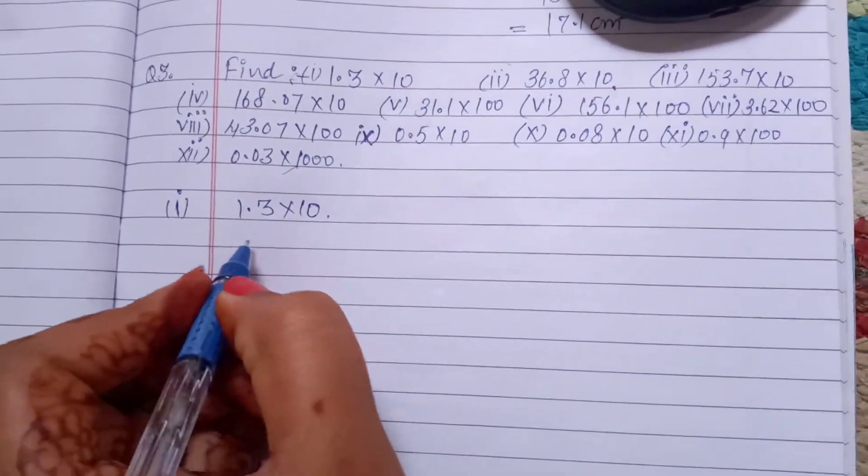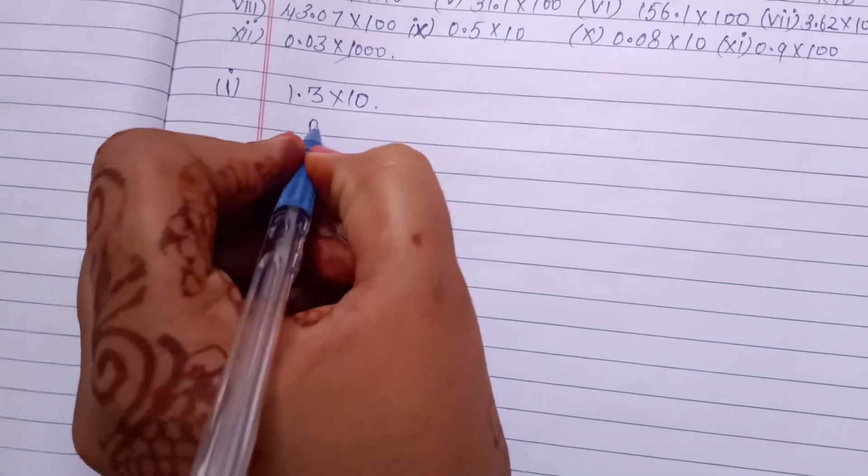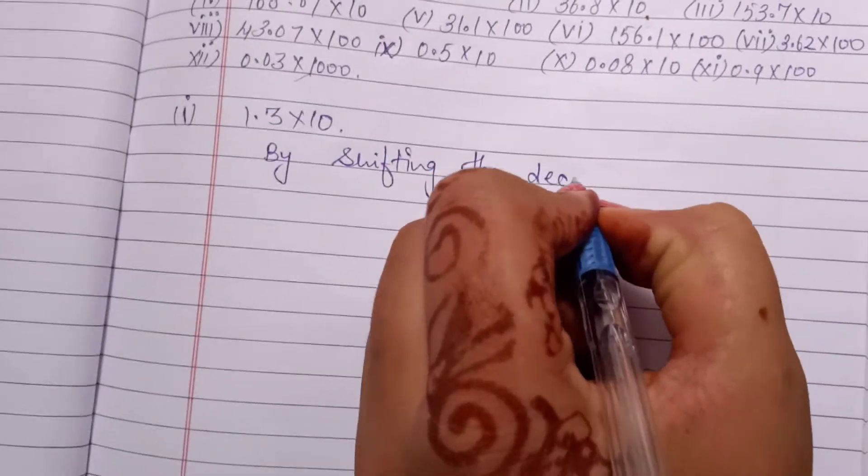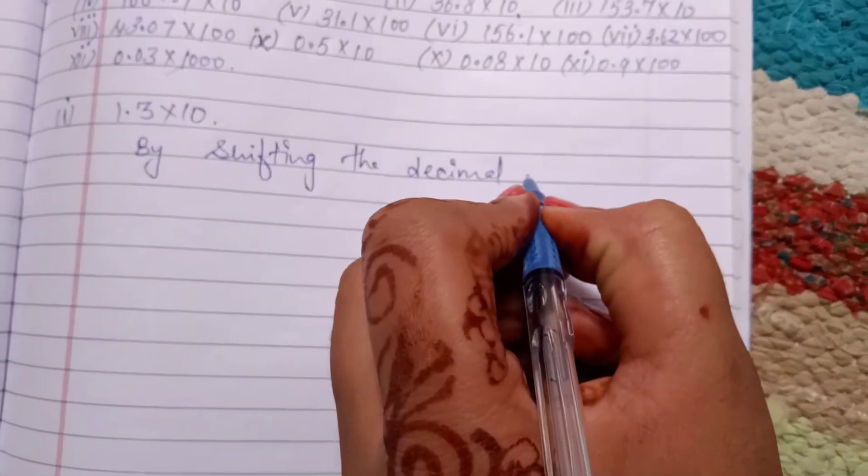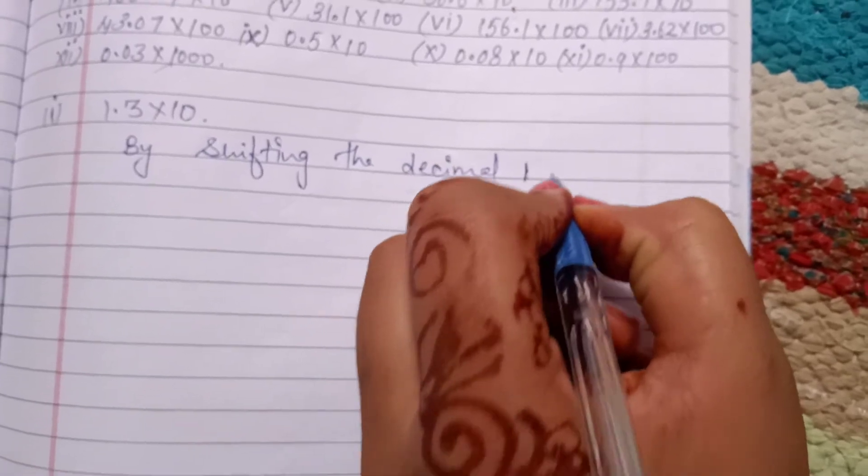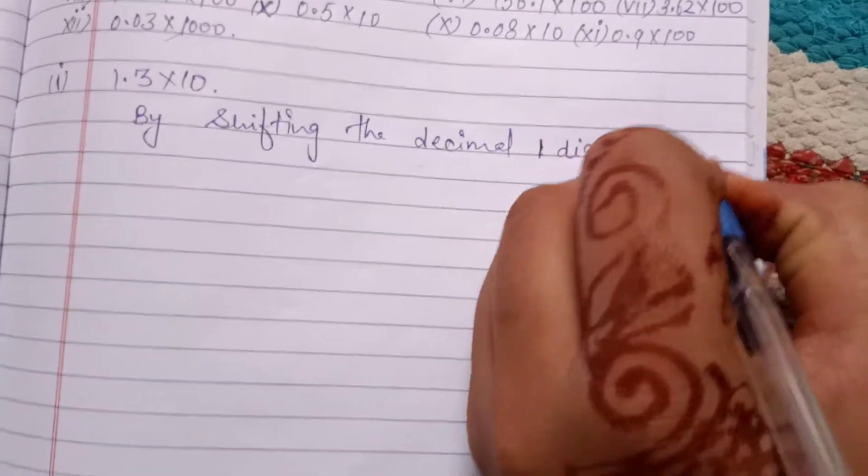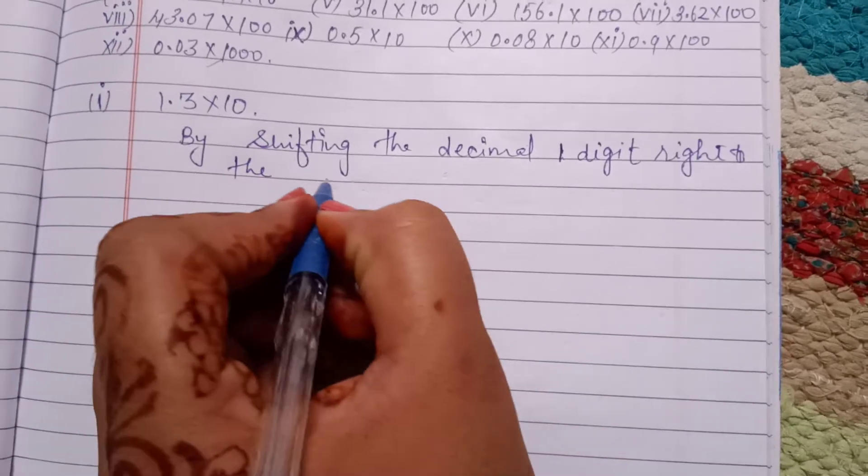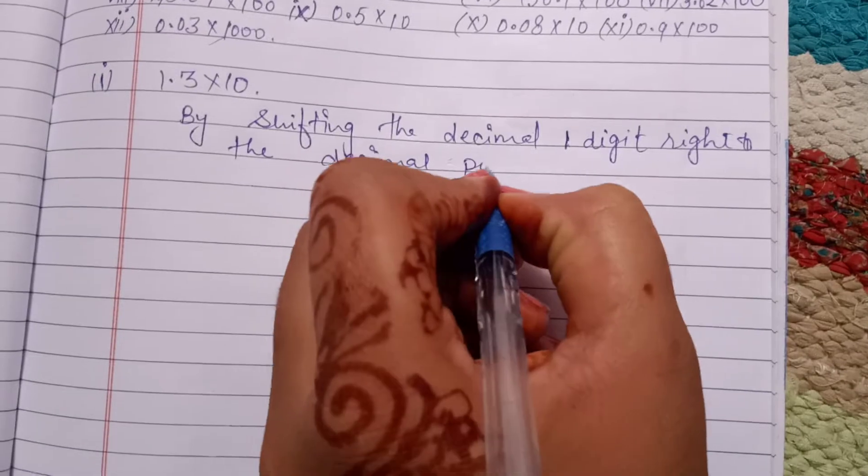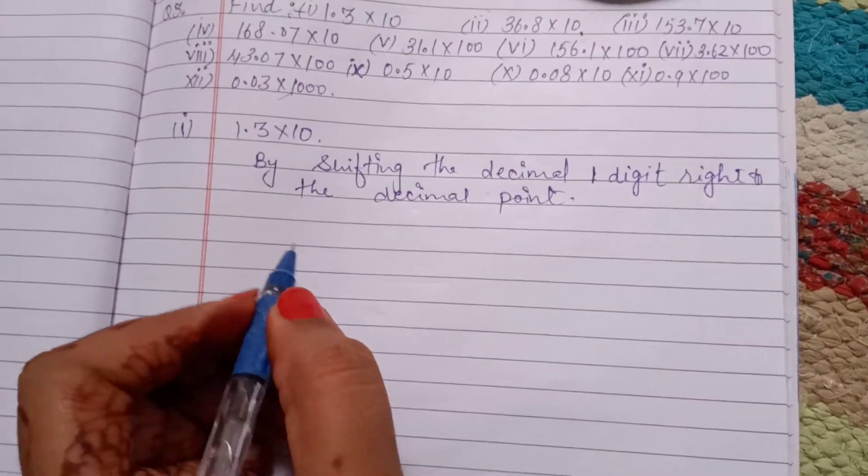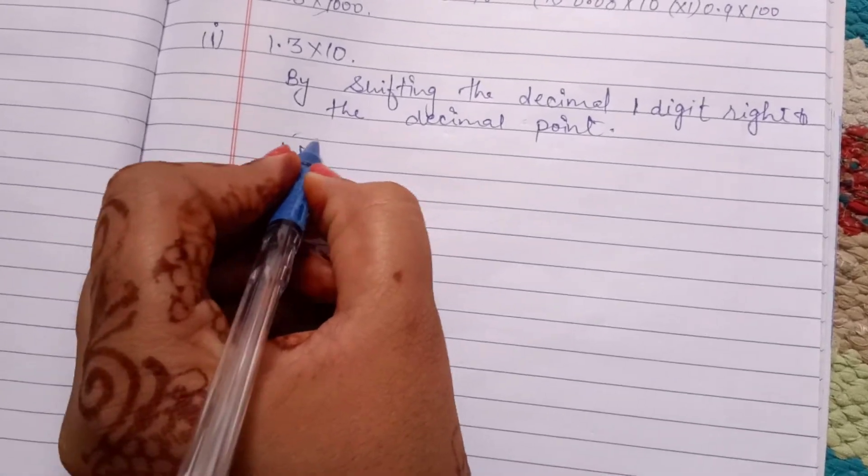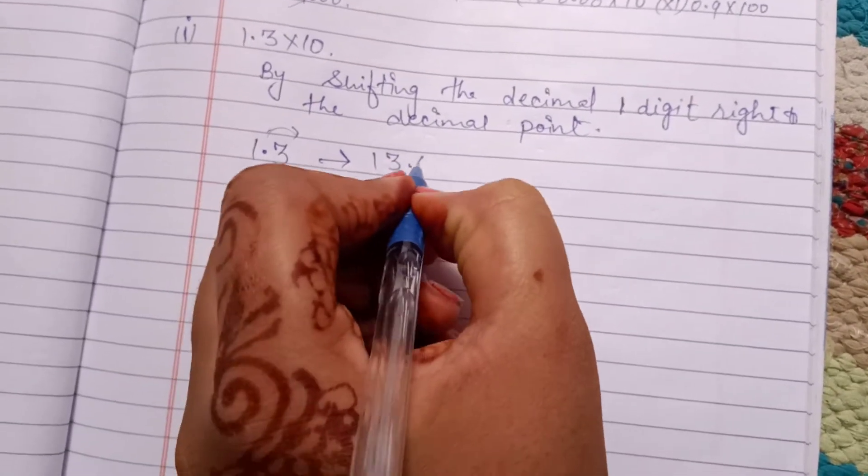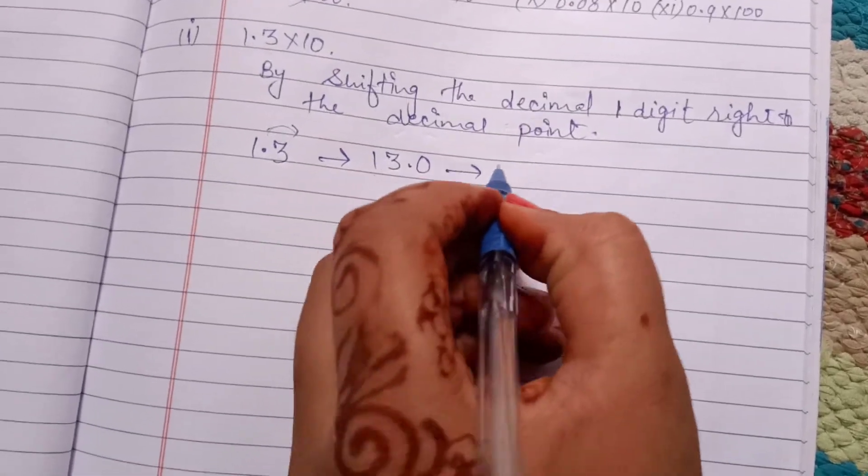First method is by shifting the decimal one digit right to the left. Decimal point, that is here 1.3. If we shifted to right side one digit, then it become 13.0, or you can write only 13.